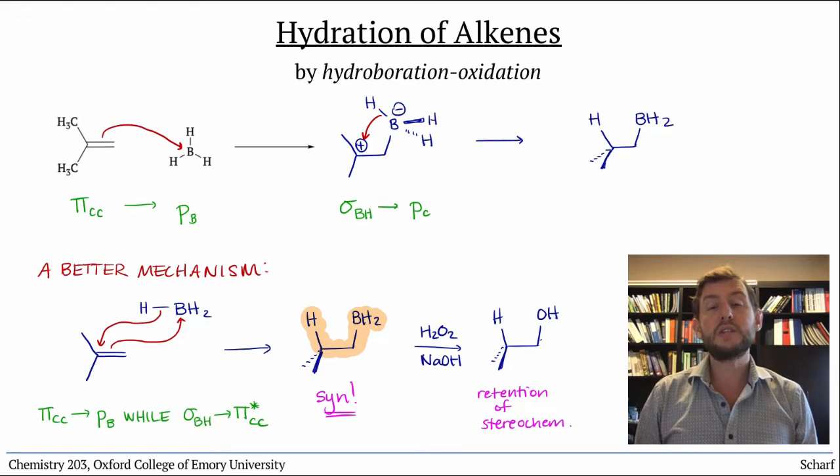Overall, these two steps, hydroboration and oxidation, turn an alkene into an alcohol with the OH group at the less substituted carbon, and with the two added groups syn or cis to one another.